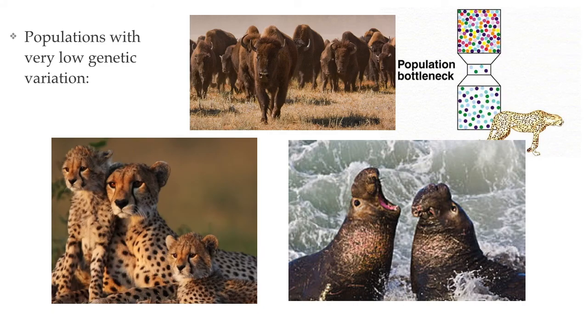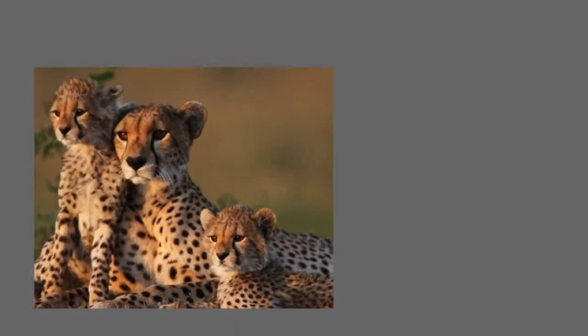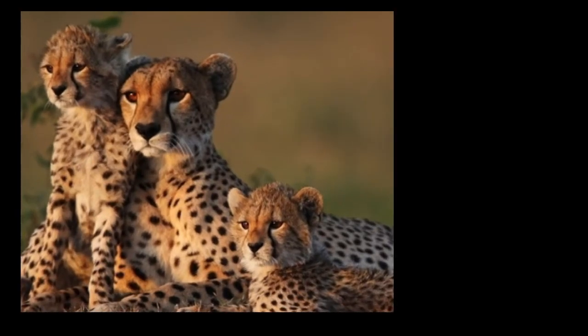There are quite a few examples of populations with low genetic diversity as a result of a population bottleneck. For example, cheetahs. Cheetahs are well known for having extremely low genetic diversity, so much so that organs can be transplanted between any two cheetahs without fear of rejection. This lack of genetic diversity is actually not a good thing — it causes the cheetahs to have reproductive difficulties.